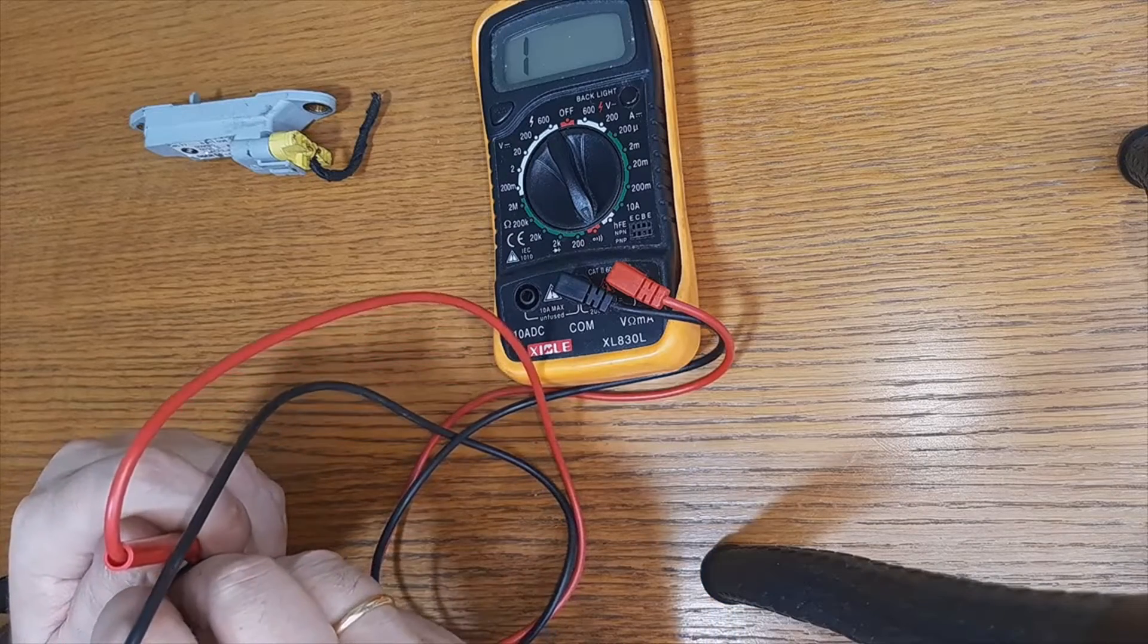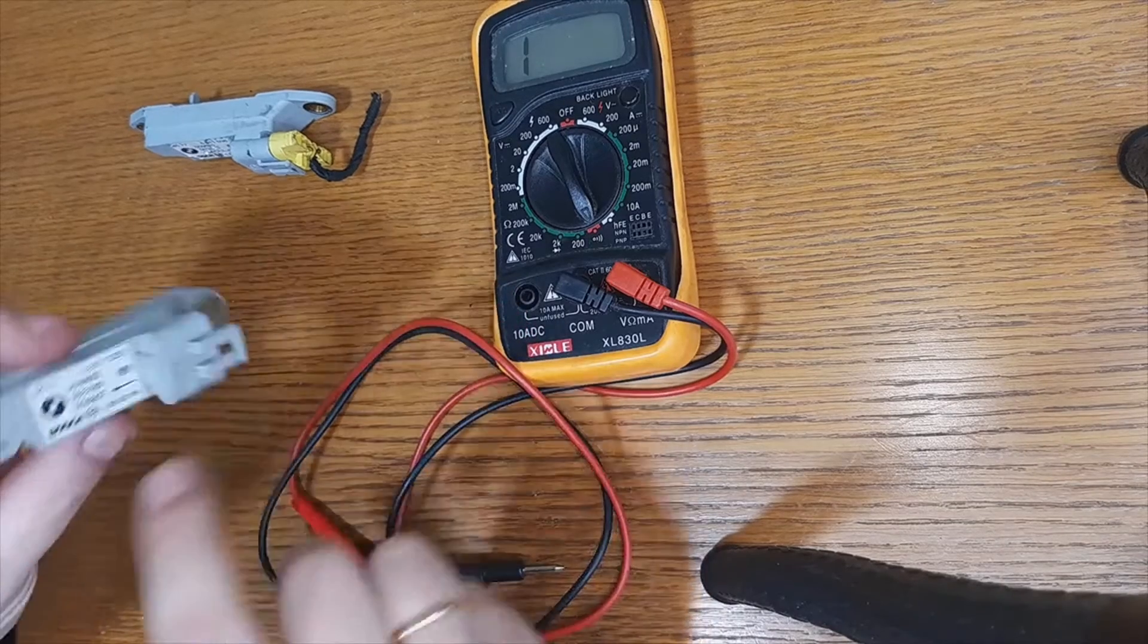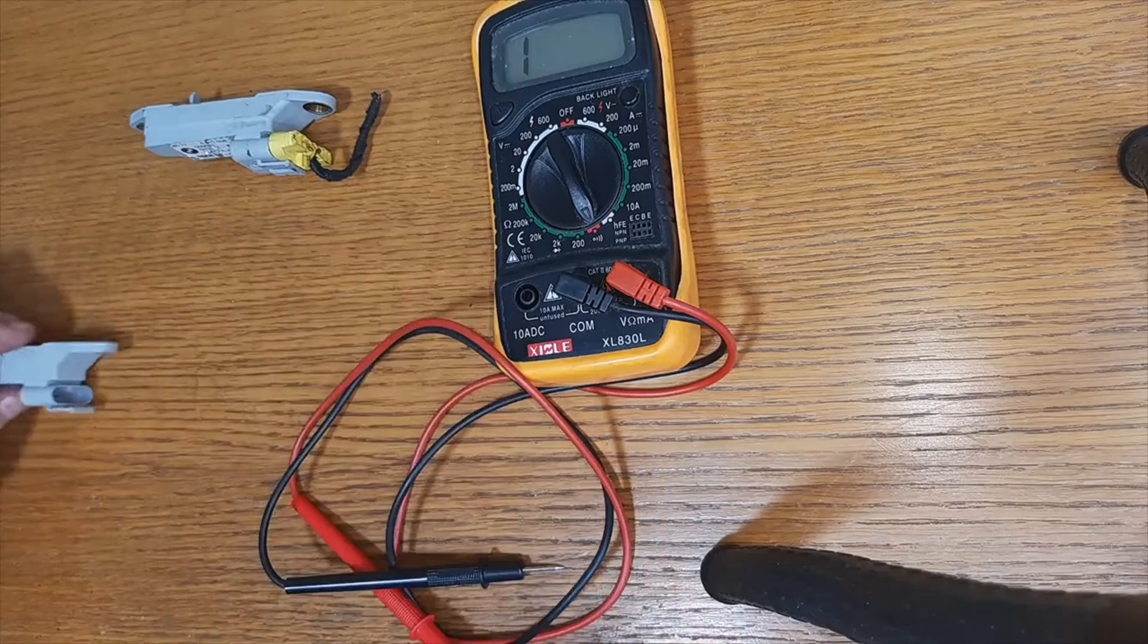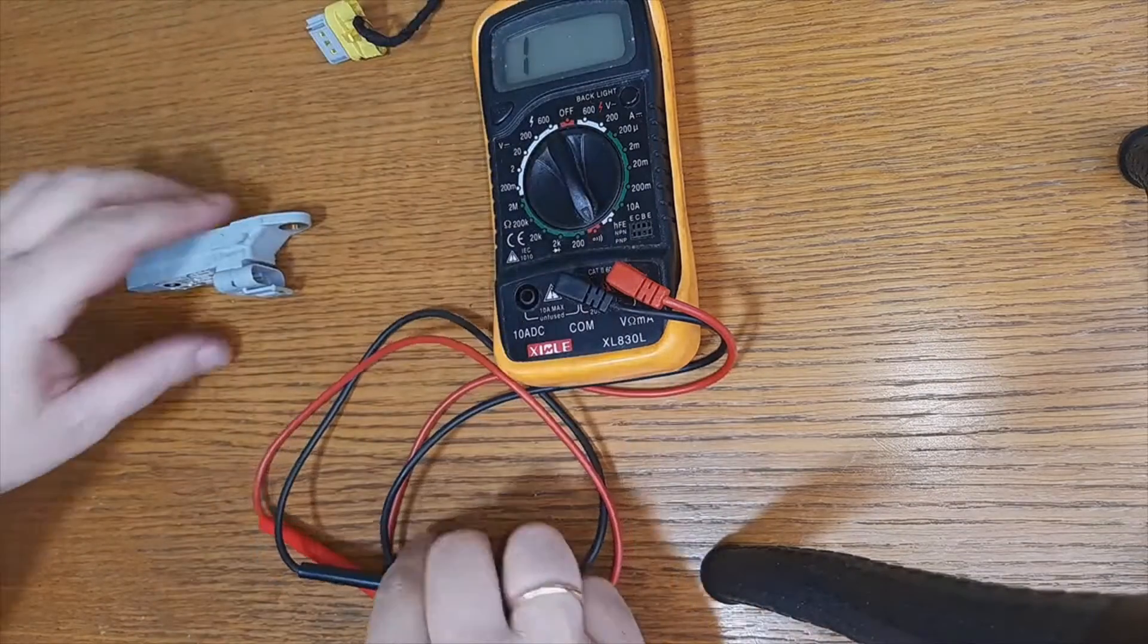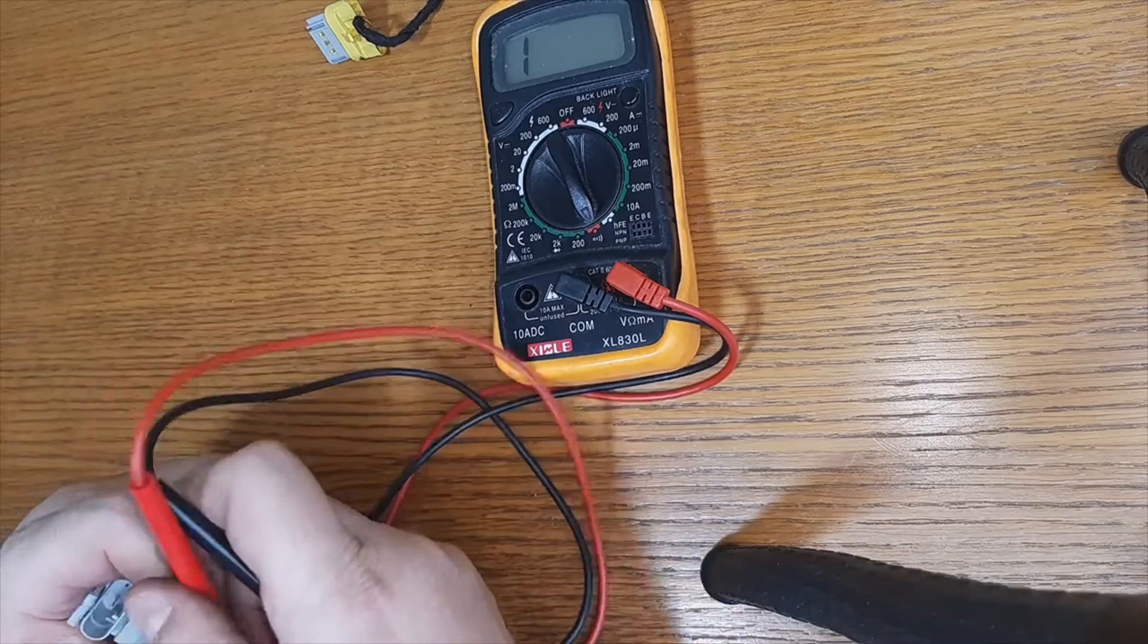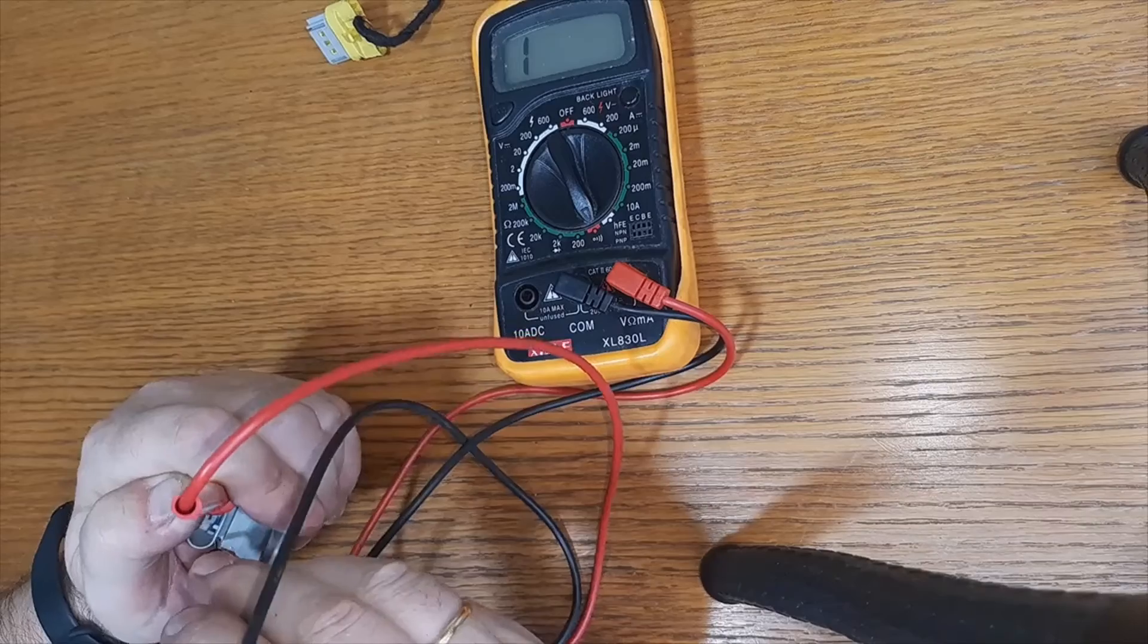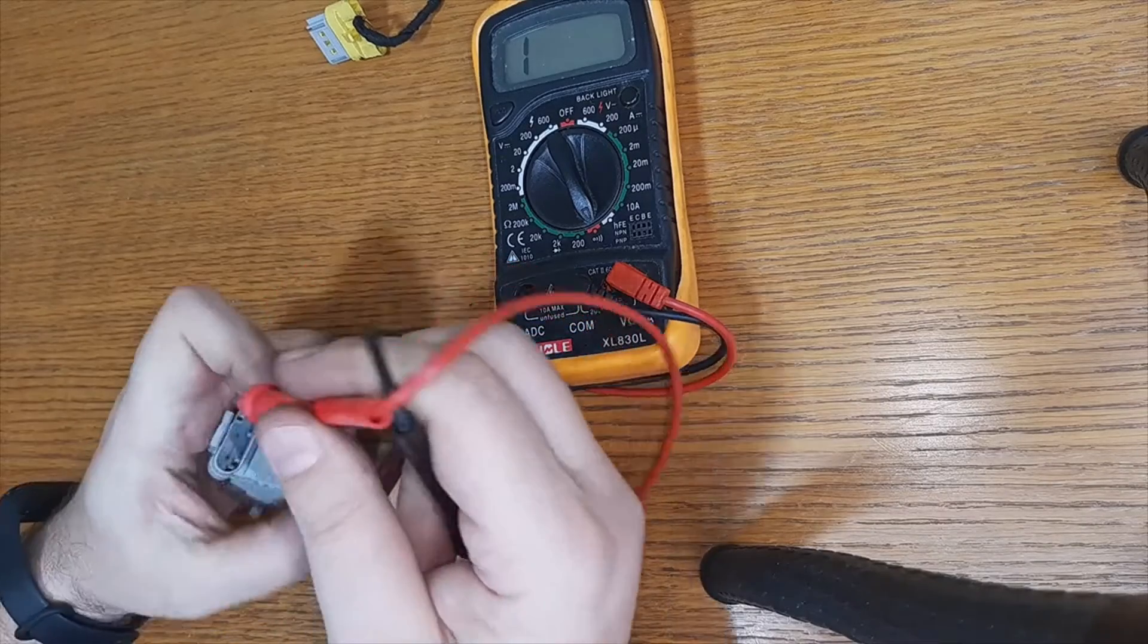Now we are going to check the other one, the one we bought second hand. In principle it doesn't give us any reading, any value, but this happens because we have to change the polarity. We are going to do the test now, changing the polarity of the cables. Sometimes it is a bit difficult to put them. It will give us a value around 527, 526 ohms its resistance.